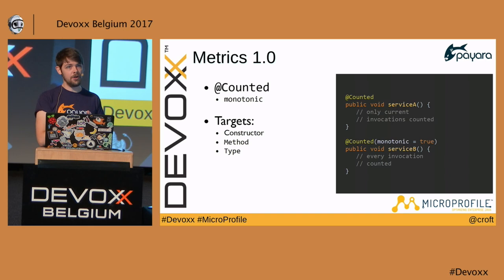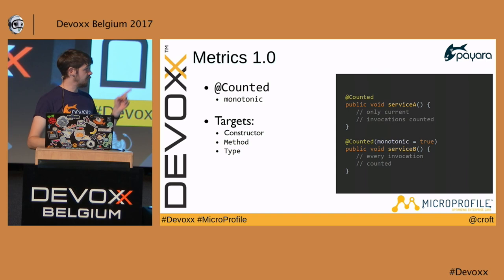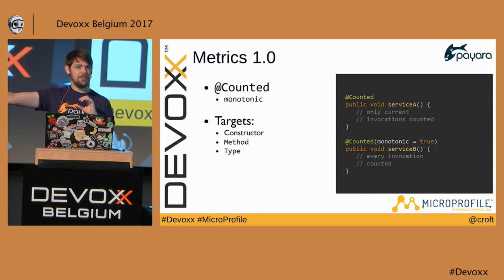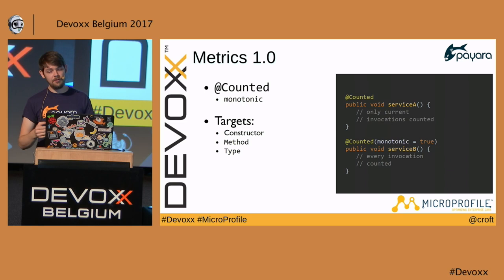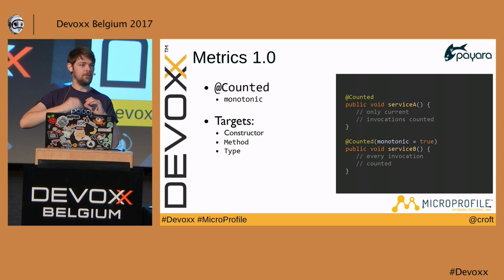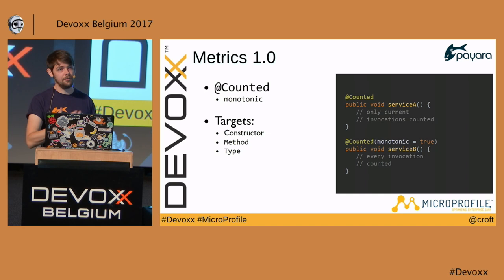@Counted has a property called 'monotonic.' If set to false (the default), it only counts current invocations — as soon as a method finishes it subtracts one from the counter, so you're only seeing things currently executing in that method. If set to true, it simply adds to the counter giving you a high watermark of total calls. This annotation can be applied to constructors, methods, and types.